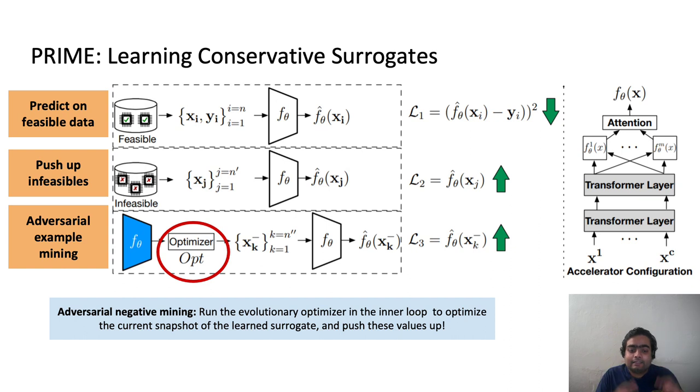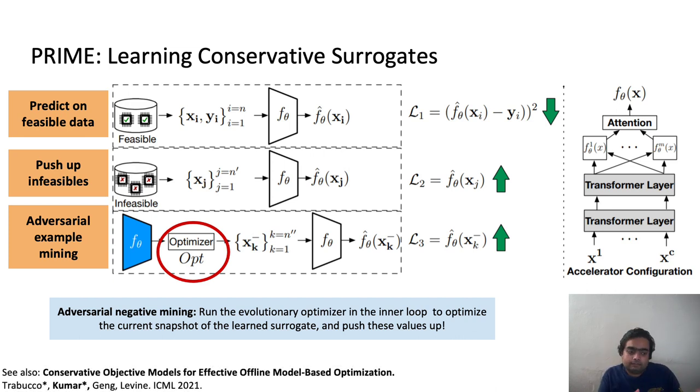So basically, the problem that we saw on the previous slide, this fooling problem, it actively mines for such examples that would fool the optimizer and pushes up their latency value, so that when you run optimization, when you are going to minimize latency, you don't find such adversarial examples at the end of training. So that's what this adversarial negative mining step does. It finds these adversarial examples and pushes their latency value out. This is also inspired from previous work that I would encourage you to check out.